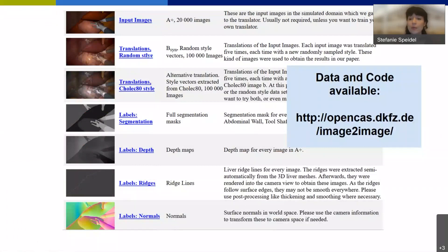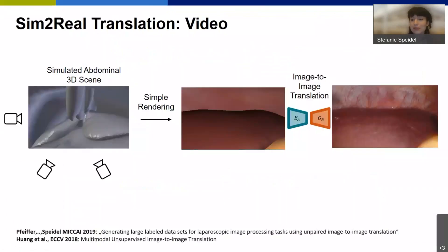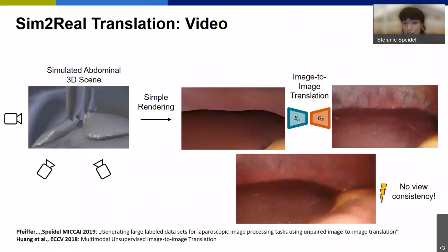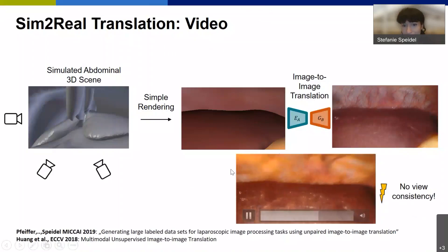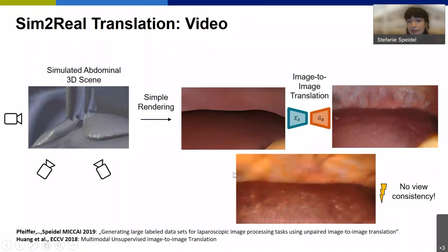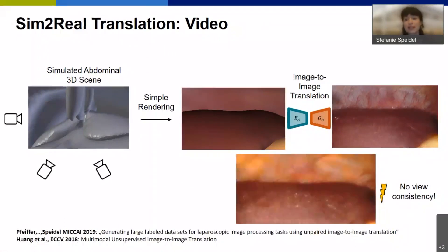The next question was how to translate this to videos, since we usually have laparoscopic videos and not only still images. If we use the image-to-image translation approach directly on videos, we have a problem because it is not temporally consistent — looking at the background, you can see it flickering with many different textures — so we cannot use this approach directly for videos.